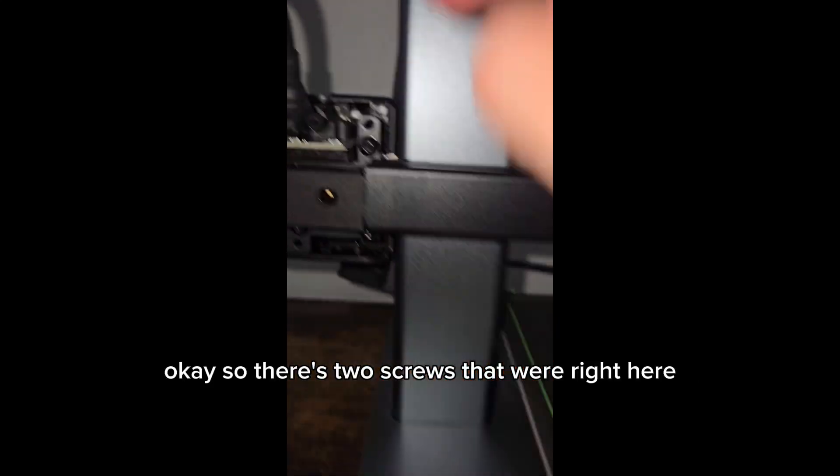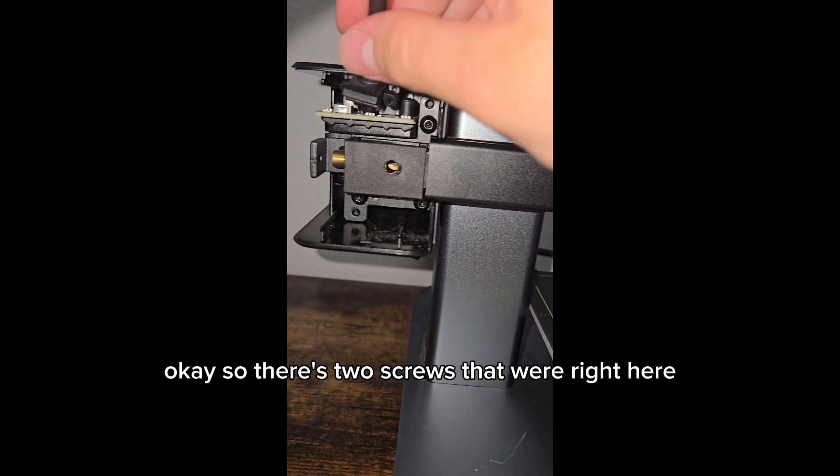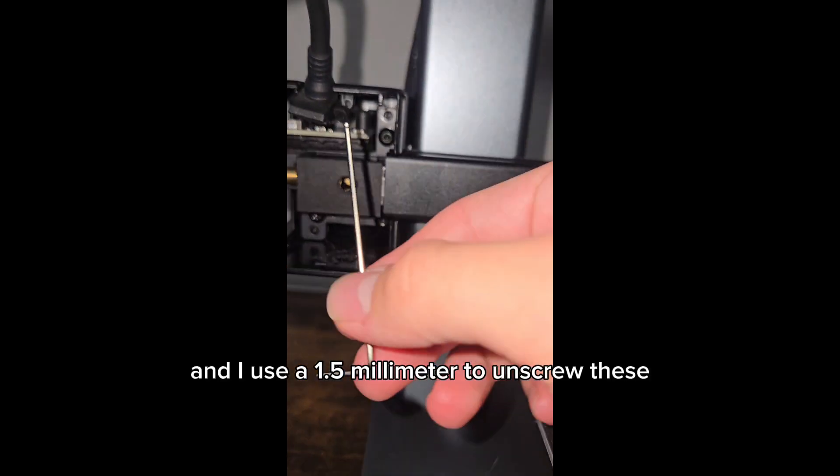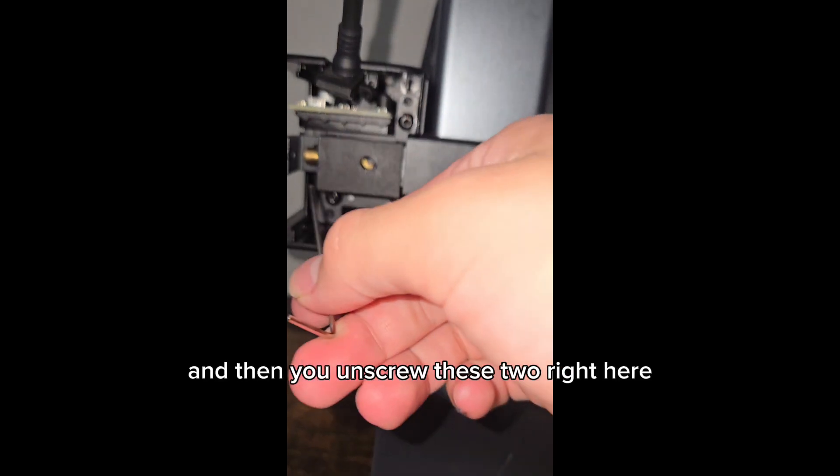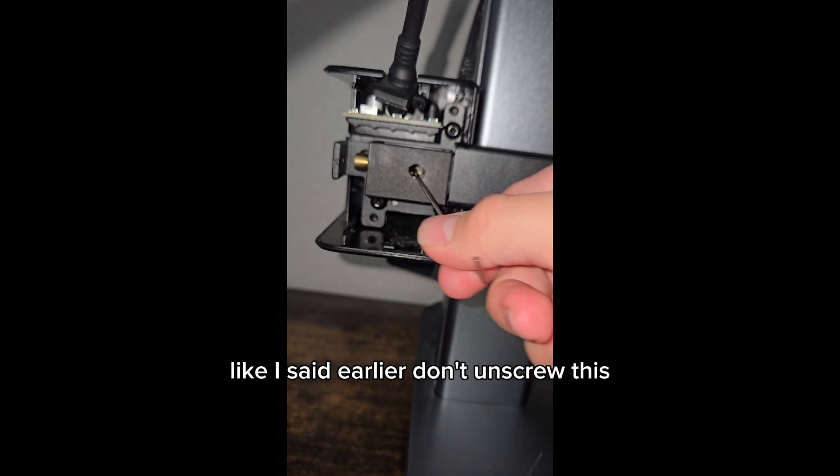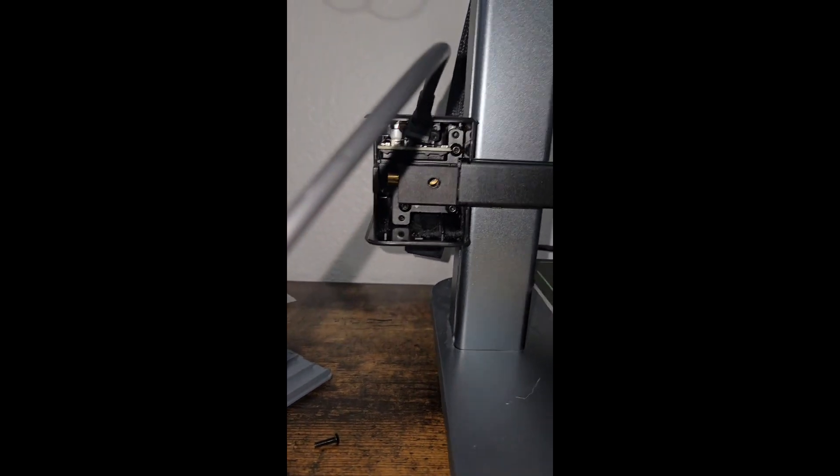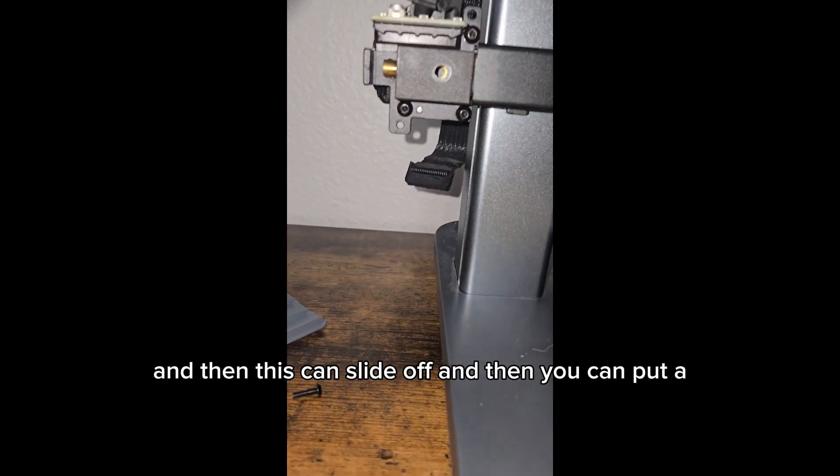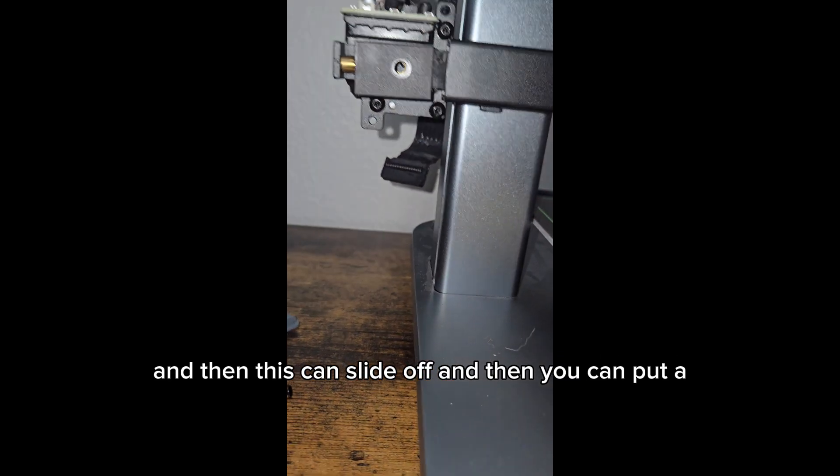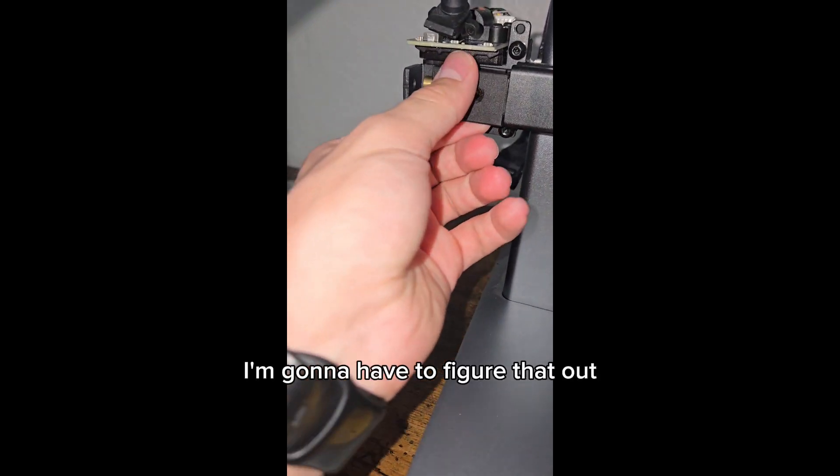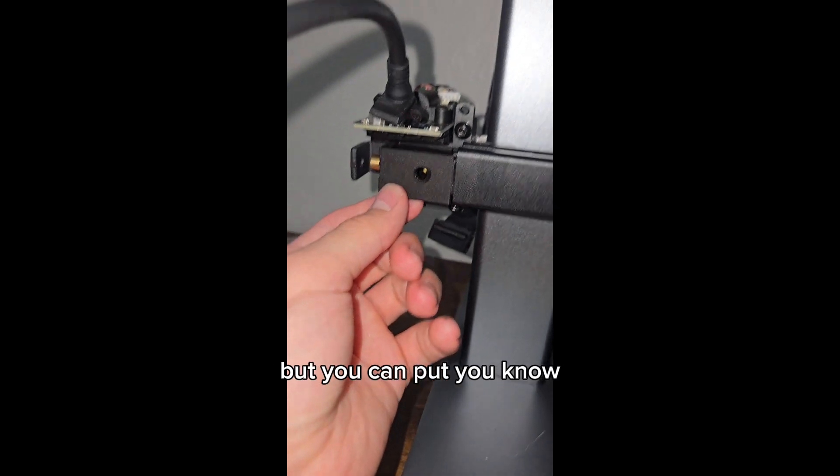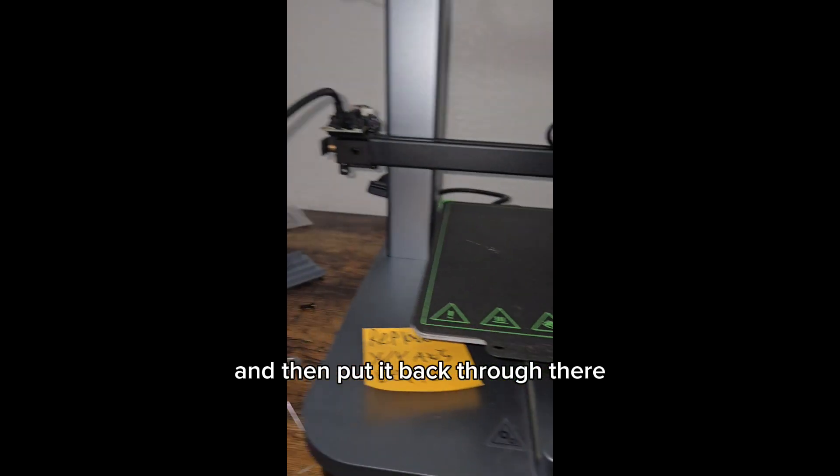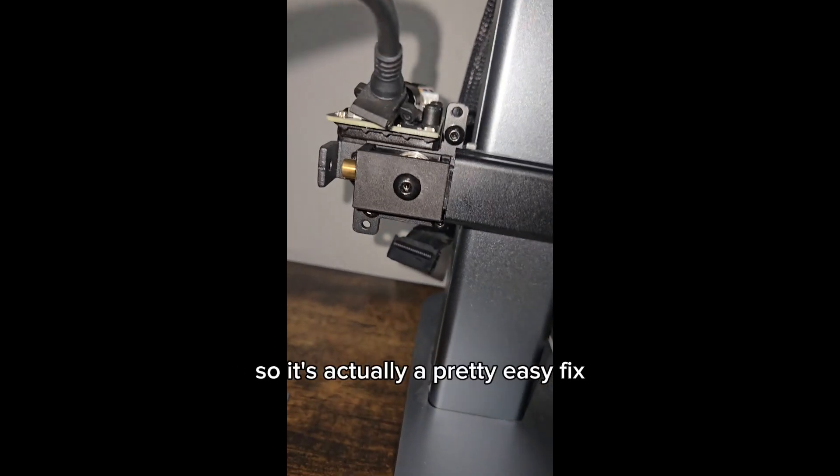So there's two screws that were right here, these really tiny ones. And I use a 1.5mm to unscrew these. And then you unscrew these two right here. Like I said earlier, don't unscrew this, I messed up. And then this can slide off. And then you can put the belt through there and then bam, and then put it back through there. So that's what I'm going to do now. So it's actually a pretty easy fix.